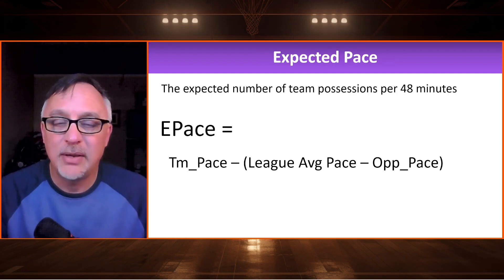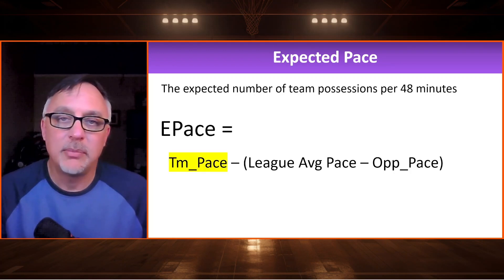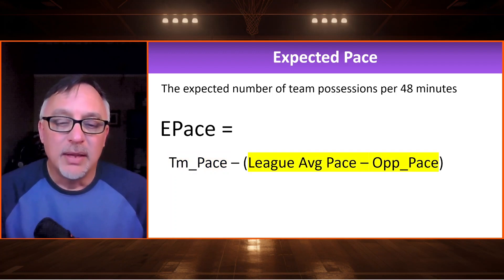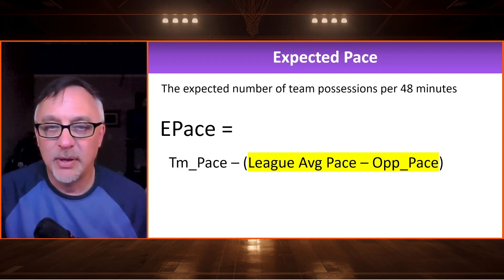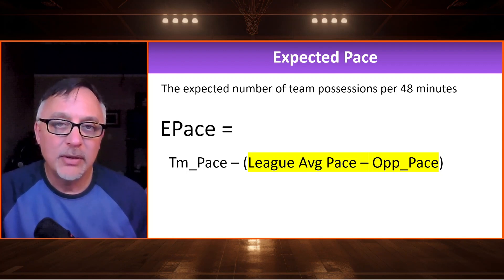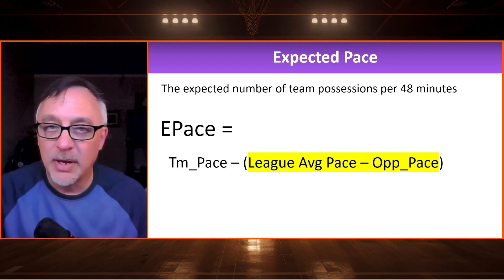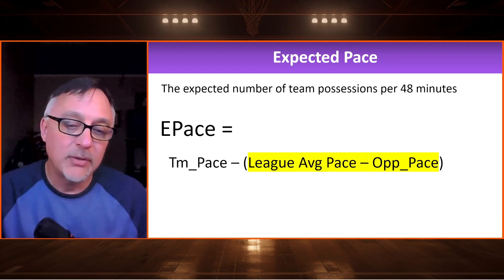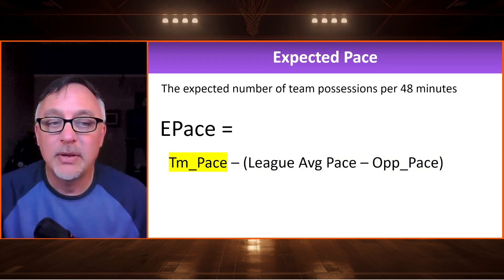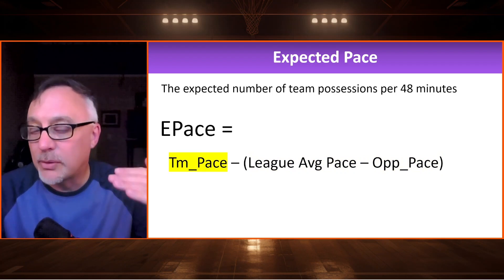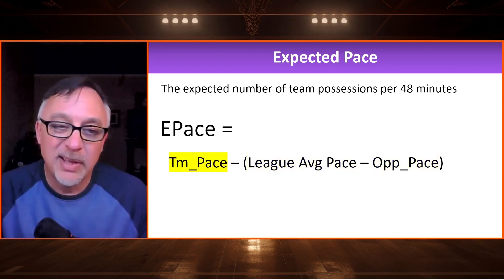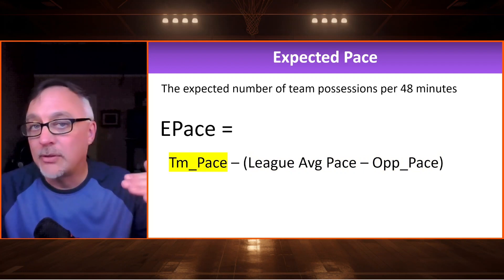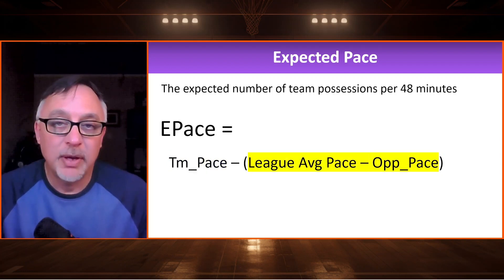Before that, we need one more stat: the expected pace. Two teams don't necessarily play at the same pace. This is the team's pace minus the following: the league average pace minus the opponent's pace. When we subtract that, if the opponent pace is slower than the average, we get a positive number, and subtracting it from team pace gives something less than team pace — that team plays slower. If the opponent pace is higher than league average, that number is negative, so we end up adding to team pace, meaning the team's pace may actually go up.